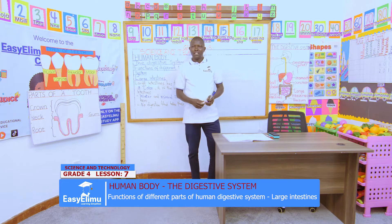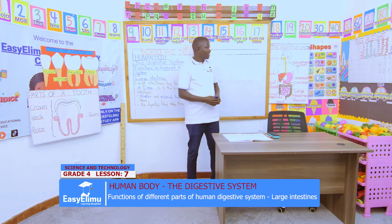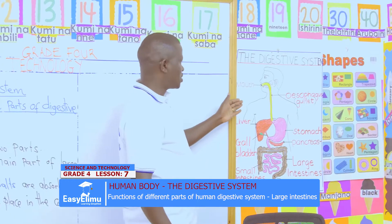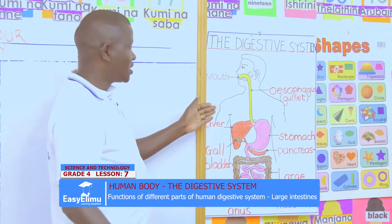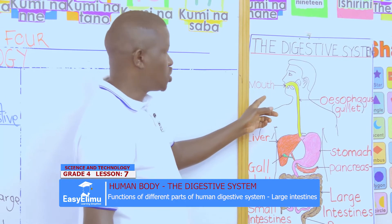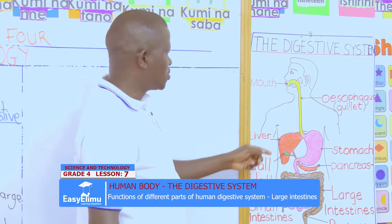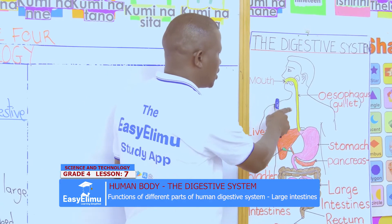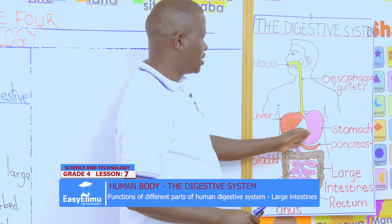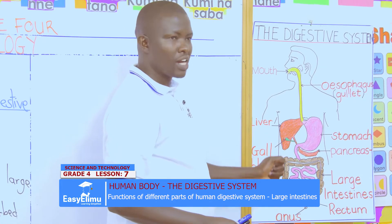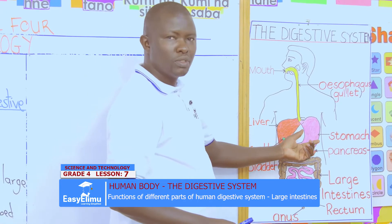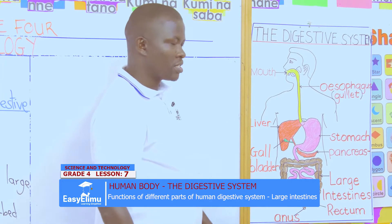To start with, on our previous lessons, look at this chart please — it has a digestive system. From the mouth, after the food has been chewed and broken into small particles, it travels down the oesophagus in boluses. Once it comes to the stomach, it mixes with hydrochloric acid and the gastric juice produced by the stomach. And digestion of proteins takes place in the stomach.